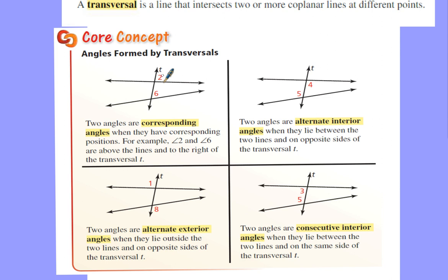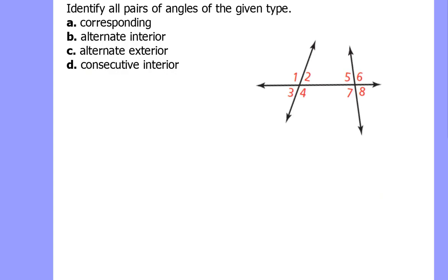For example, top right corner and top right corner — corresponding. Top left corner and top left corner — corresponding. Bottom left, bottom left; bottom right, bottom right — all corresponding, same position. Now let's look at an example of where we can locate some corresponding angles.